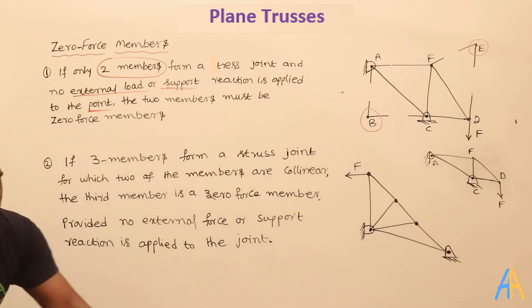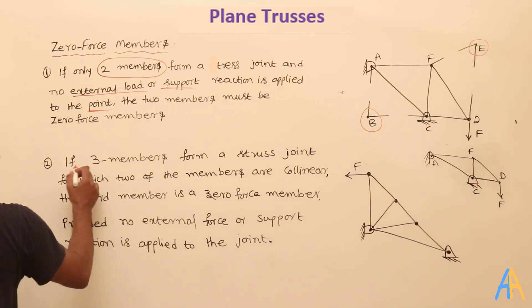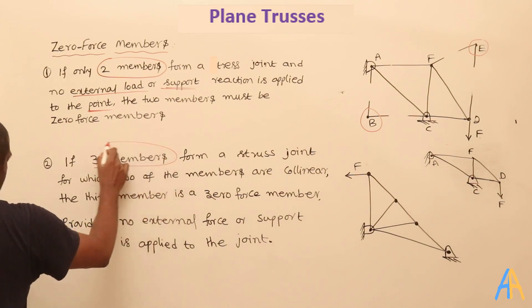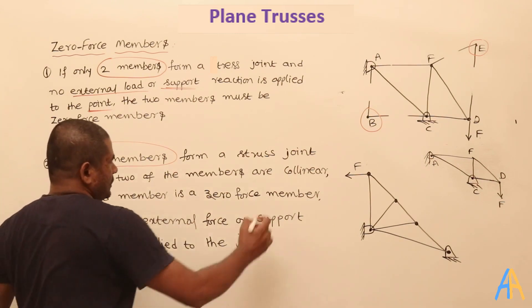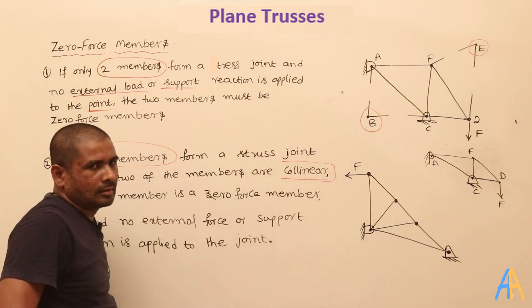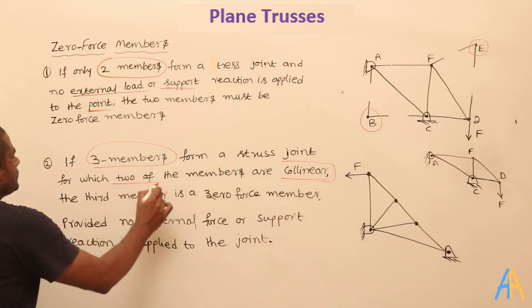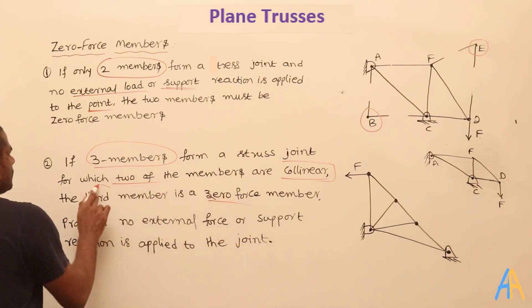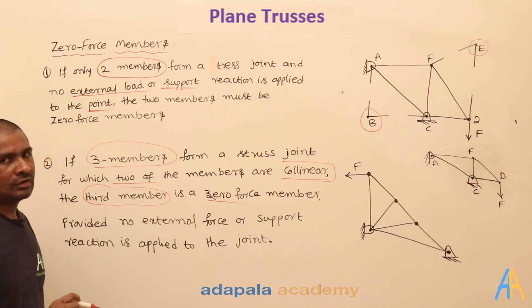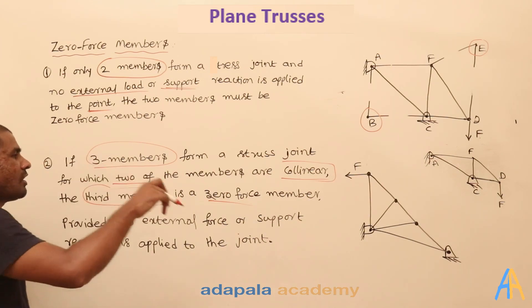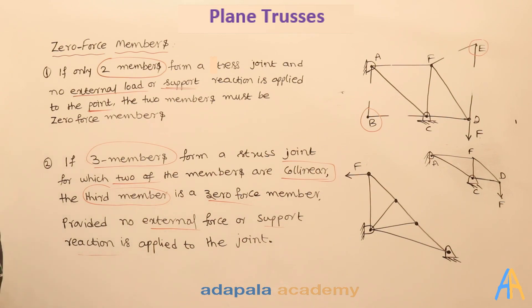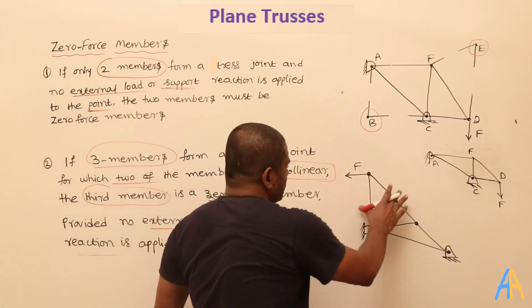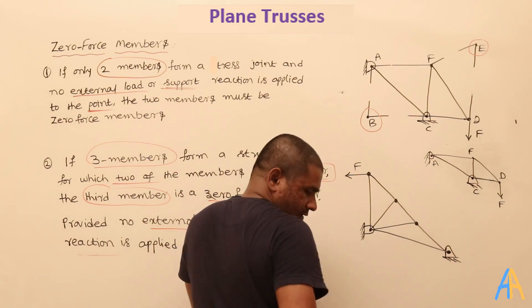The second condition applies to a three-member joint: whenever three members form a joint and two of those members are collinear — meaning they lie on the same line — then the third member, which is inclined to the first two, is a zero force member. This is provided there is no external force or support reaction applied at that joint.